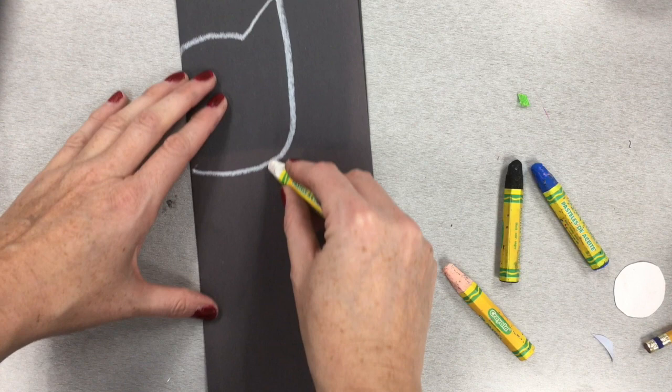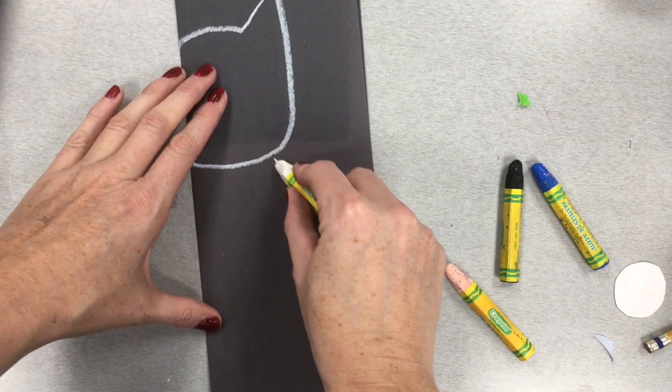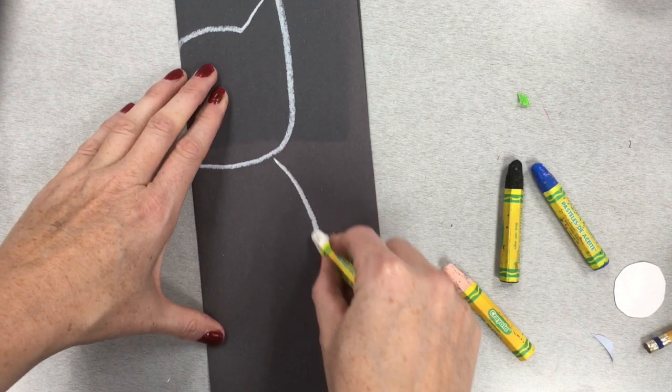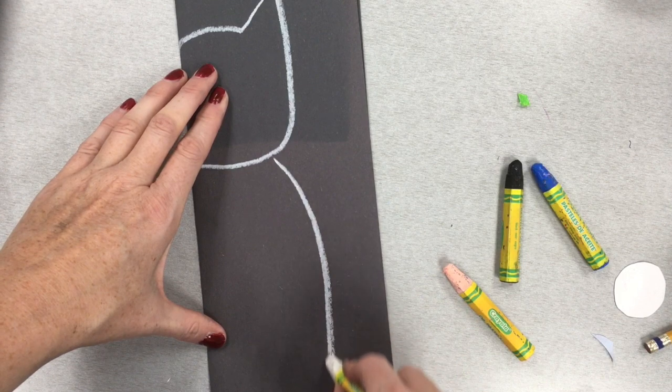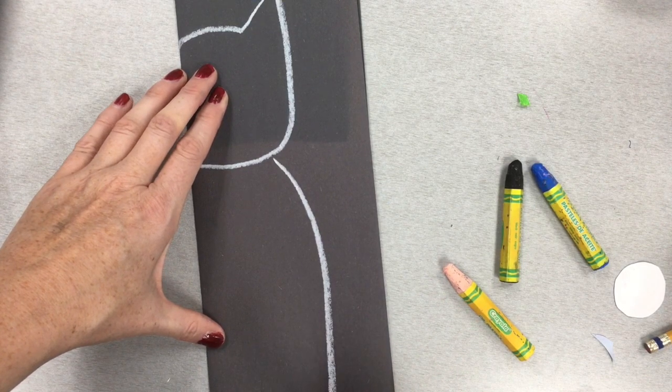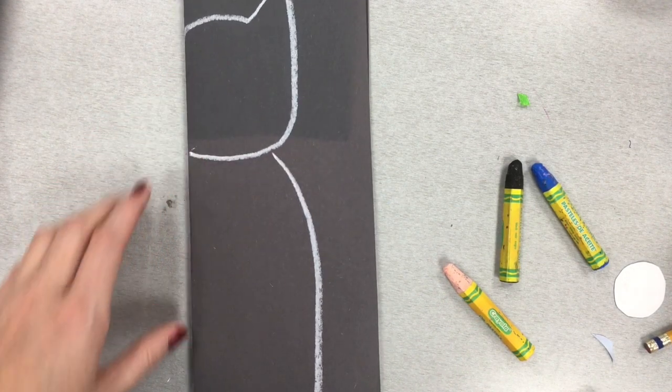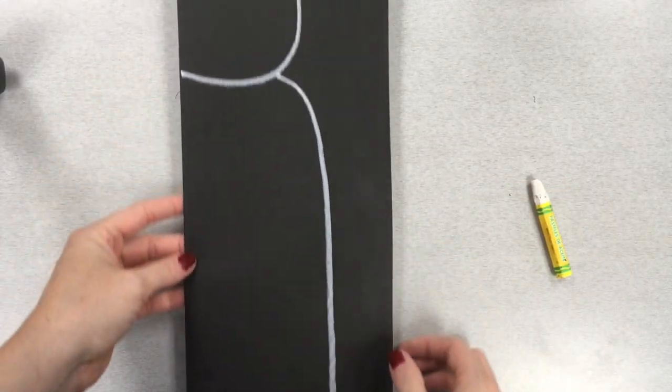Take your oil pastel and start about the middle of that head and come all the way down to the edge of your paper and stop. The drawing is complete.